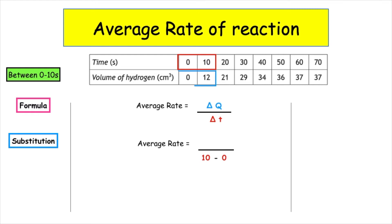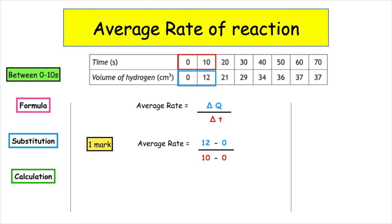We then have to look at the quantity for that time interval, and we can see that we're given 0 and 12. We always start with the big number: 12 minus 0. That correct substitution gives us one mark. We then use our calculator. 12 minus 0 gives us 12, and 10 minus 0 gives us 10. When we pop that into the calculator, 12 divided by 10 gives us 1.2, which gives us our second mark.